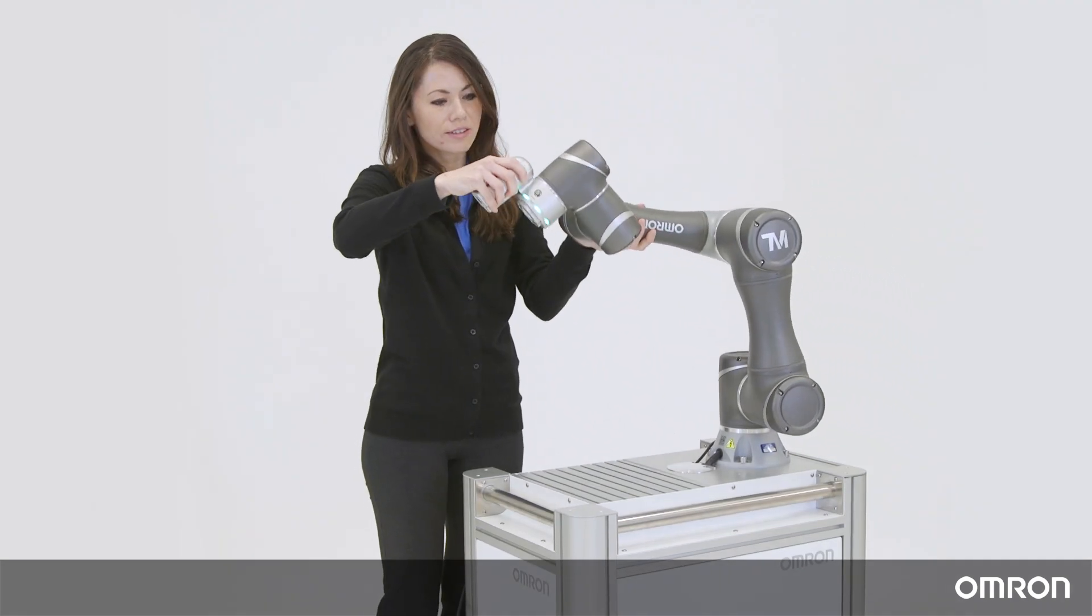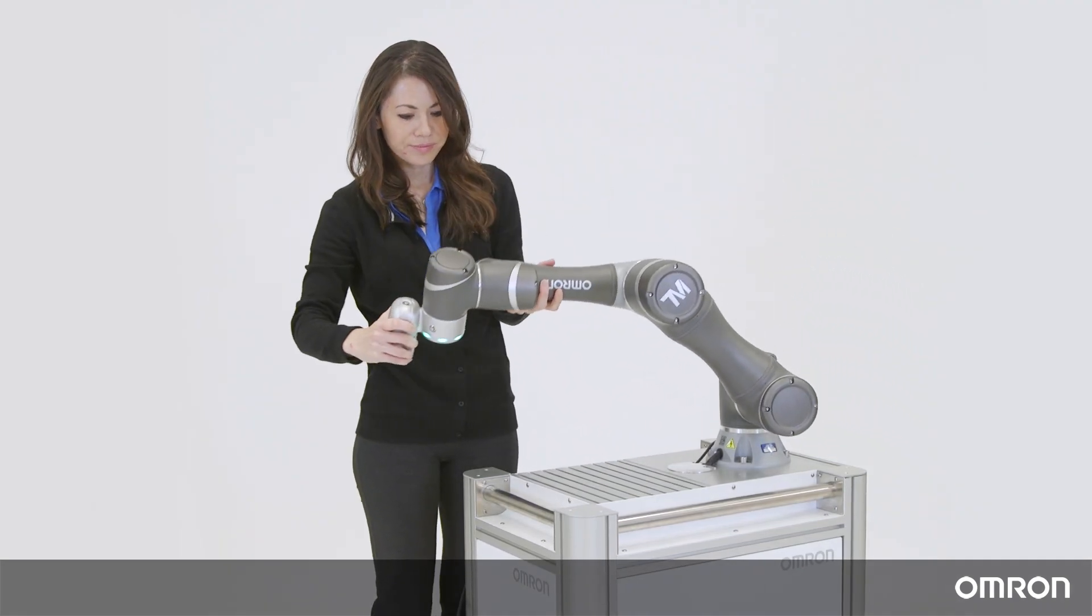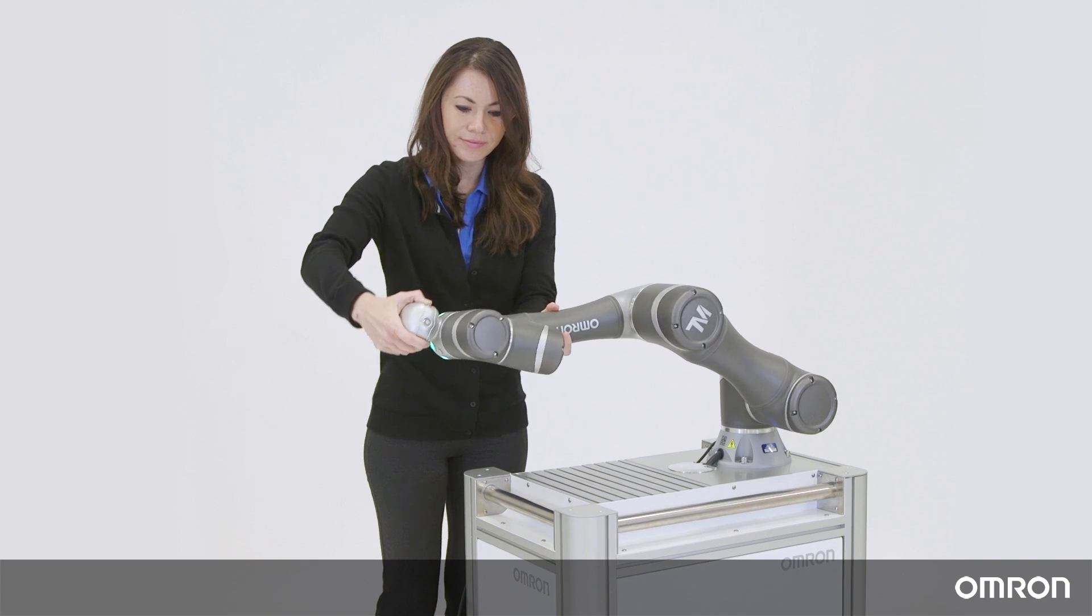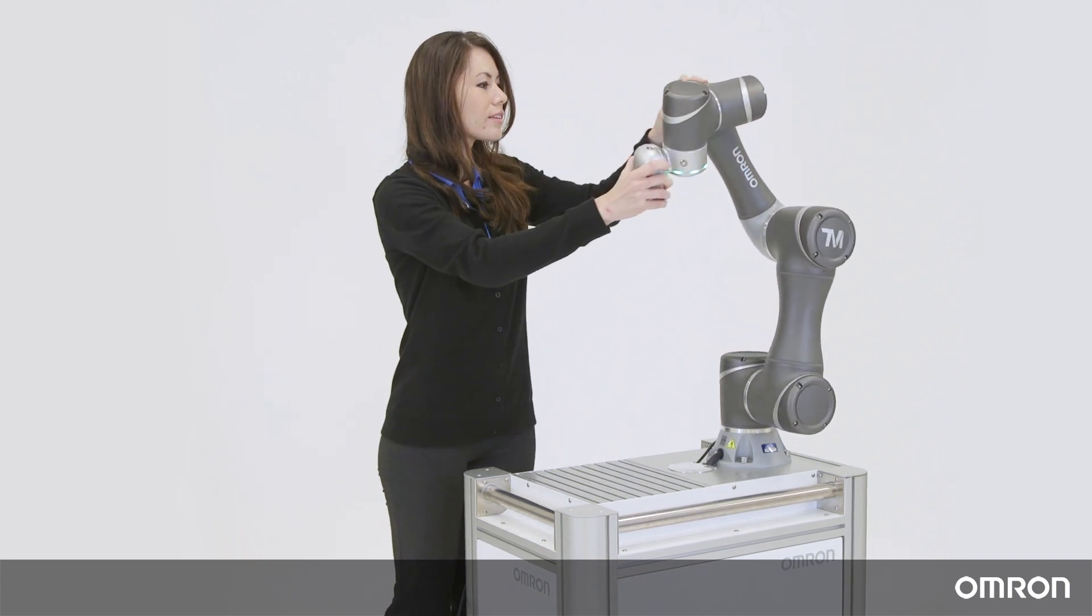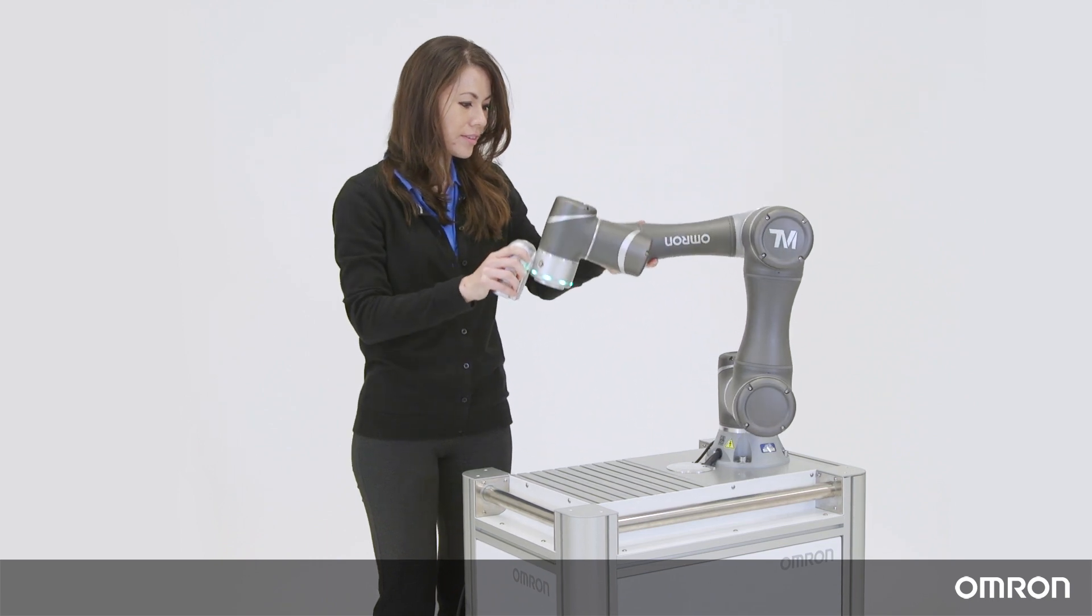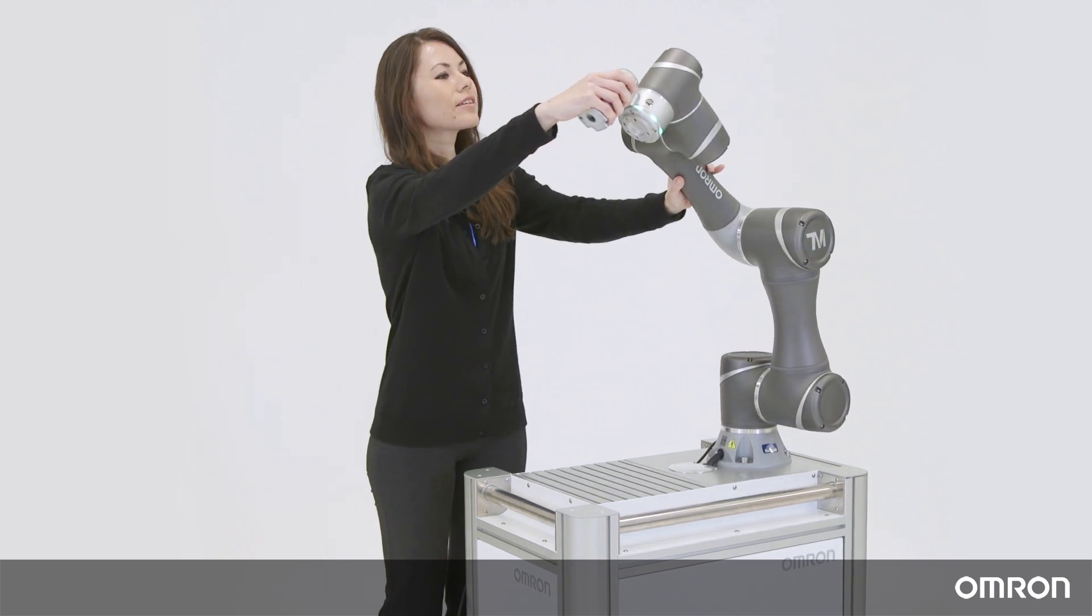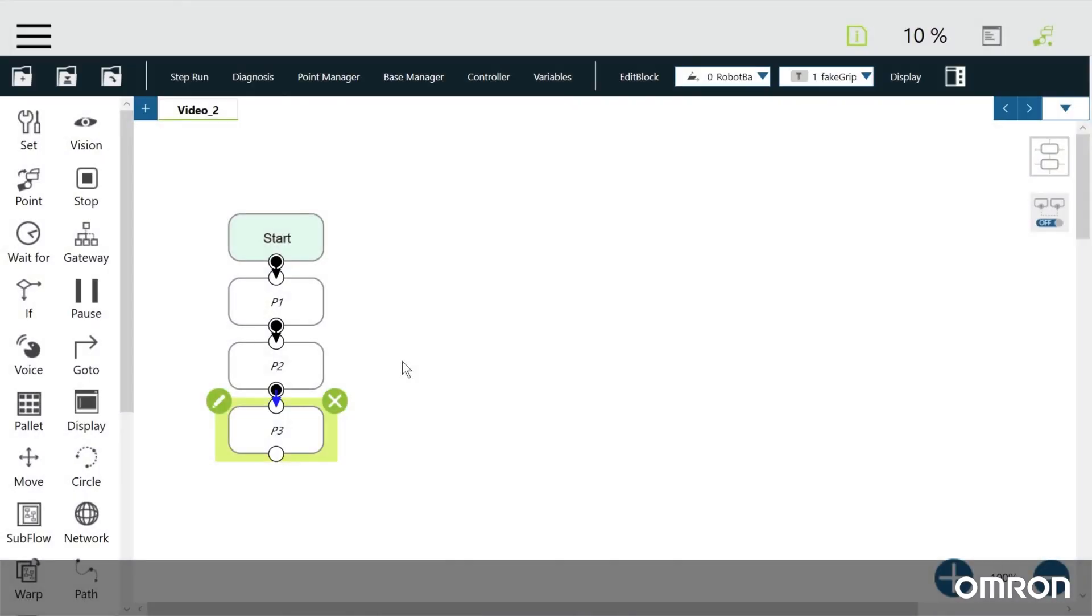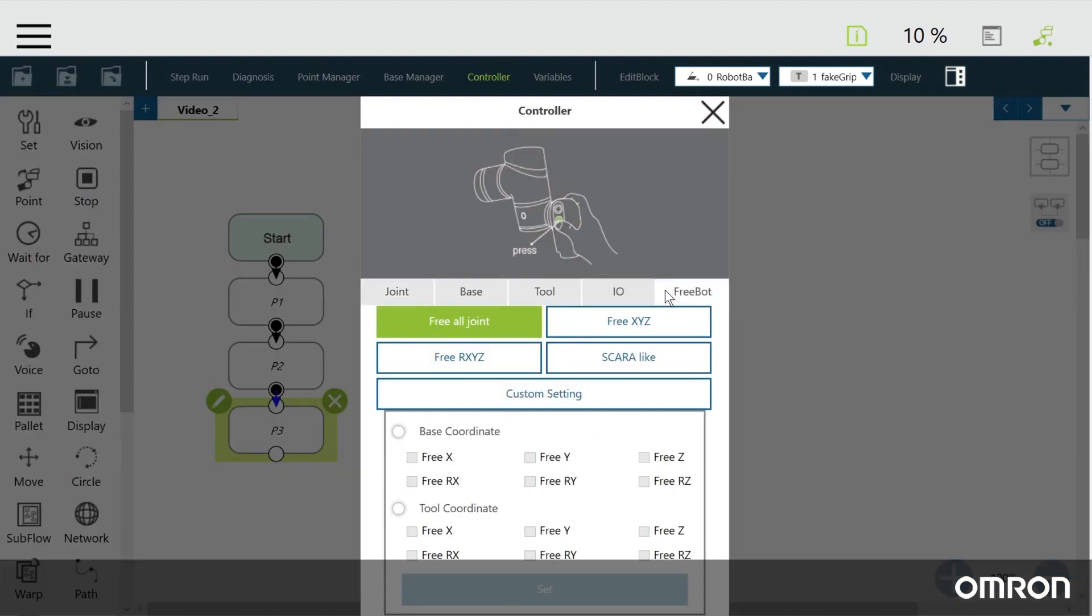You can move the cobot freely with the free button. But in some cases, you will want to restrict the movements because that will make it easier for you to teach the cobot certain motions. For example, if you want to teach the cobot to do a simple pick and place using a SCARA-like motion, go to Controller, Freebot, and SCARA-like.